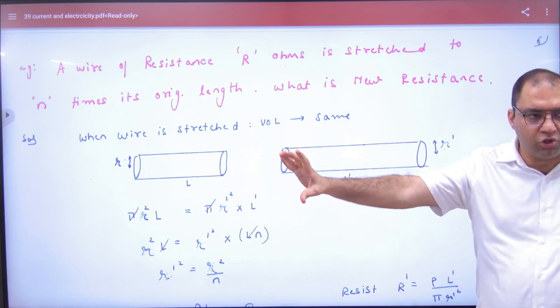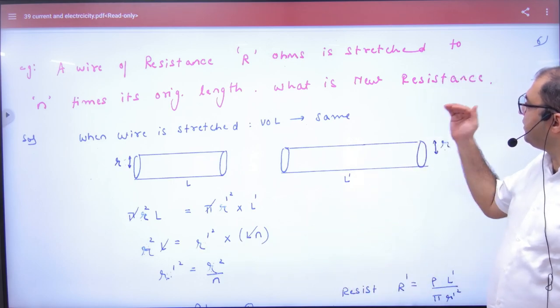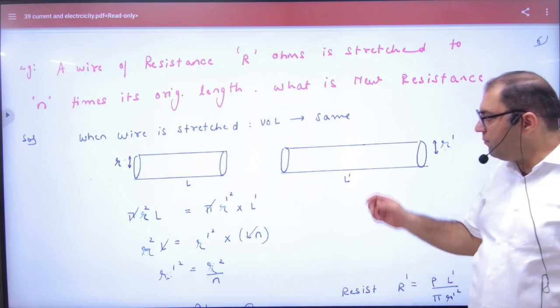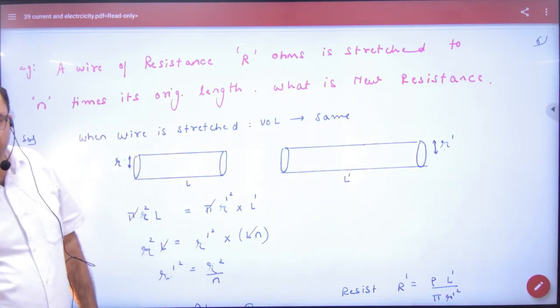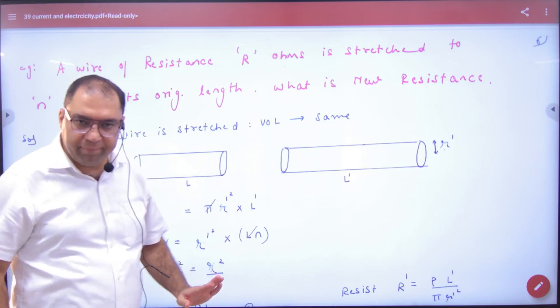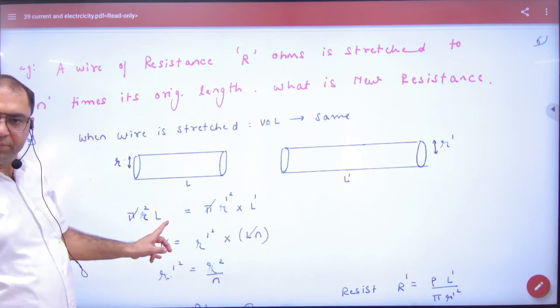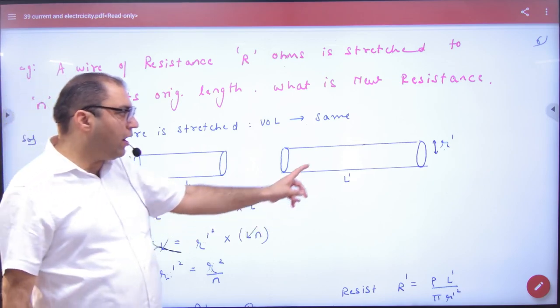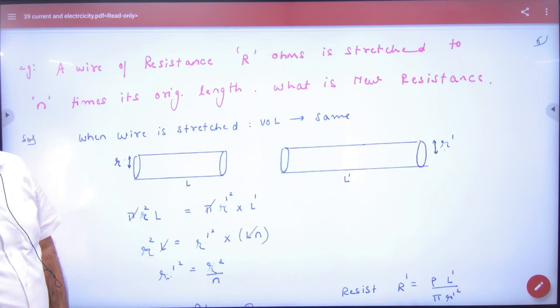So what will happen with the wire? The radius will be small and the length will be bigger. So what is the new resistance? When we pull a wire, what is the volume in that case? The same. So the volume will be the same. The volume is the previous πR²L. The new volume is πR'²L'. Clear here?